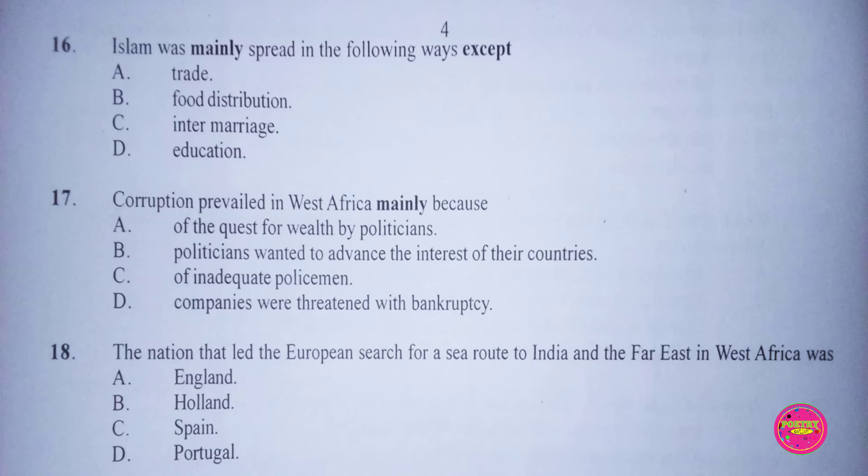Question 16. Islam was mainly spread in the following ways except: A. Trade, B. Food distribution, C. Intermarriage, D. Education. The correct answer to this question is B. Food distribution.